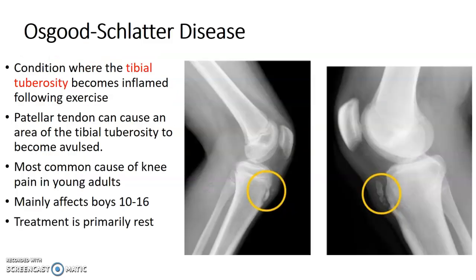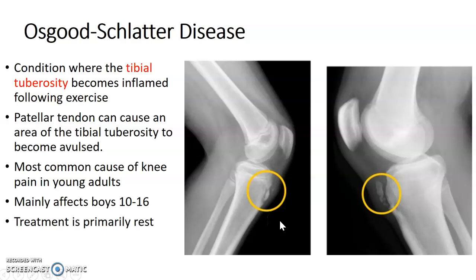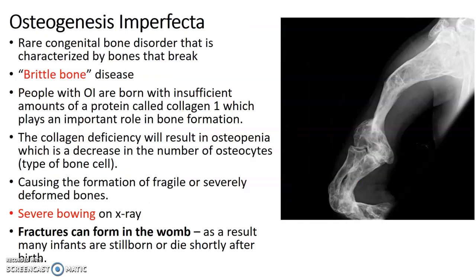Osgood-Schlatter disease is when the tibial tuberosity becomes inflamed, usually following exercise. The patellar tendon can cause the area of the tibial tuberosity to become avulsed or pulled away. It mainly affects boys ages 10 to 16 and is the most common cause of knee pain in young adults. Treatment is usually just rest.